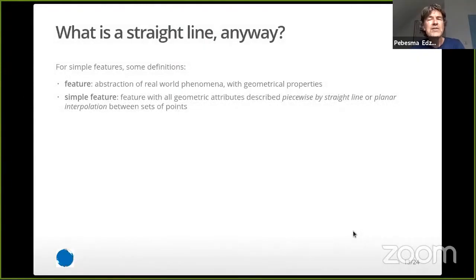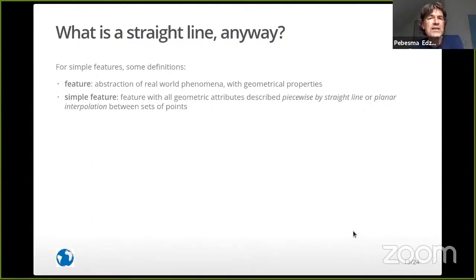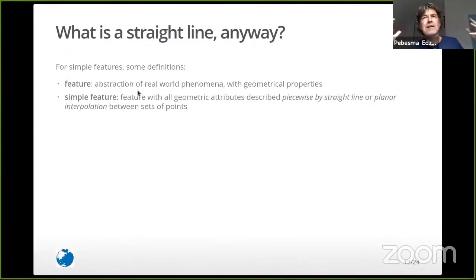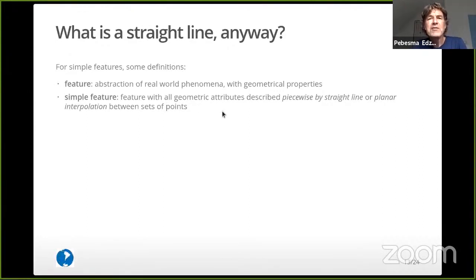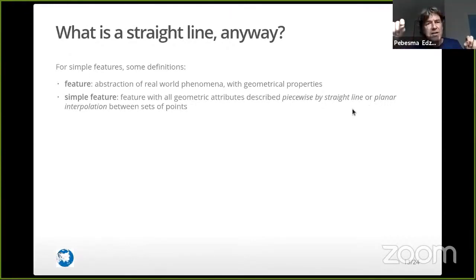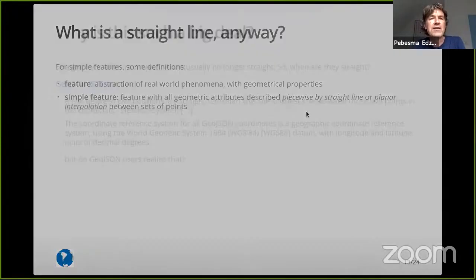So then the question comes: what is a straight line? How do we deal with straight lines in spatial data? For simple features — the way we nowadays handle spatial data as points, lines, and polygons — the word 'simple' really means that we describe geometric attributes as piecewise straight lines, or planar interpolation between sets of points. We have a curve that we approximate by sections of straight lines; otherwise we can't handle it. That is essentially what it comes back to.